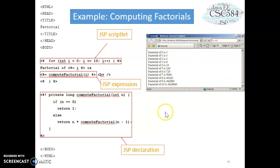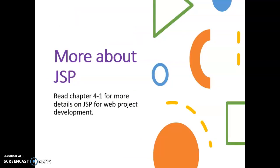This is the result for this computing factorial JSP file. That's all for now. For more detail of JSP for web development, please read chapter 4.1 in my Google site. See you in next video.